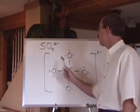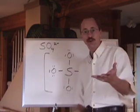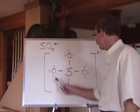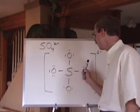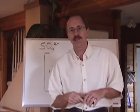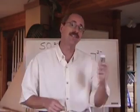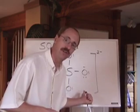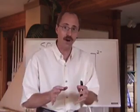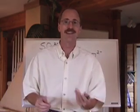Here's a Lewis diagram of the sulfate ion. It's got 32 valence electrons and I've accounted for all of those here. We're going to calculate something called the formal charge to see if that's the best Lewis diagram possible. It's a valid one, but it's not necessarily the best.